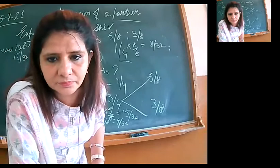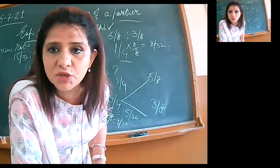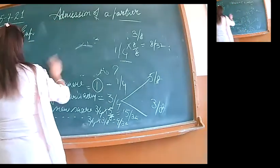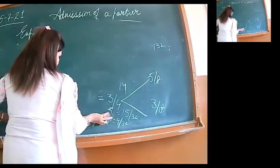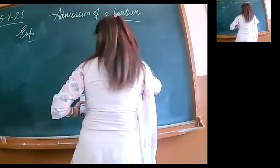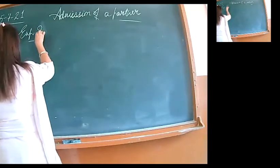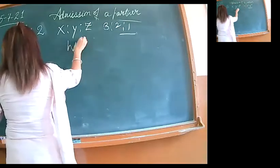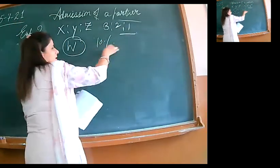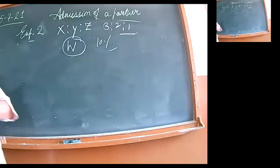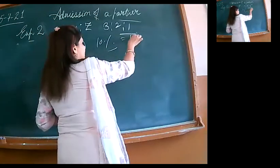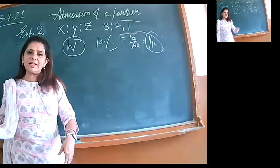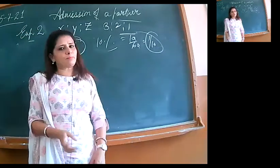Typical to some extent, but with practice, you will be able to retain it. Any doubts to anyone? Should I proceed to the second illustration? Let's see the second illustration. Illustration number two. X is to Y is to Z, three by six, two by six, one by six. Earlier I was having three partners. W has been admitted as new. We told him your share will be ten percent. Ten percent in fraction: ten percent means ten by hundred, means one by ten.